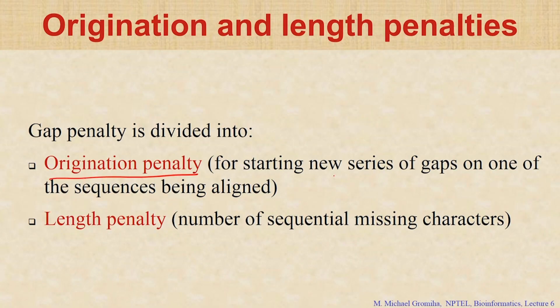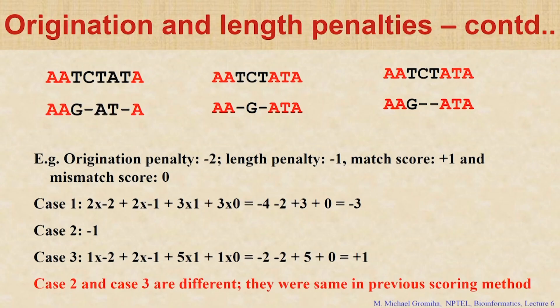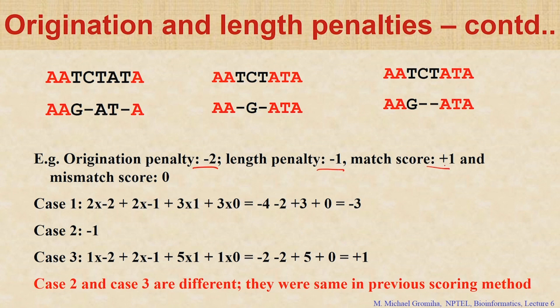Given an example: one is origination penalty, which depends upon the gaps we introduce. For each series of gaps introduced in a sequence we give a penalty — that is called the origination penalty. The second is length penalty: the number of missing characters when sequence 1 and sequence 2 are aligned. We now have the same 3 sequences: gaps at 2 different places in the first two, and gaps at the same place in the third. So we take origination penalty of minus 2, length penalty of minus 1, match score of 1, and mismatch score of 0.